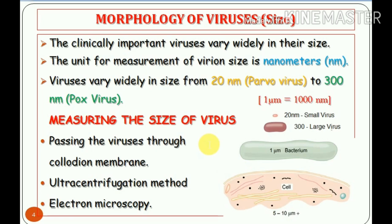How do we measure the size of a virus? Earlier, viruses were passed through a colloid membrane with different pore sizes to measure their size. Subsequently, ultracentrifugation was used — determining size by calculating the rate of sedimentation of varying-size virus particles. Finally, nowadays, electron microscopy is the best method to determine the size and even the shape of the virus.